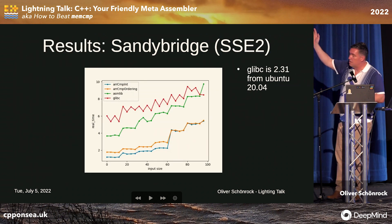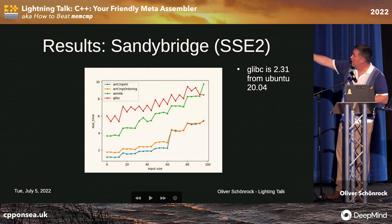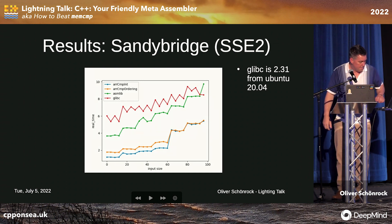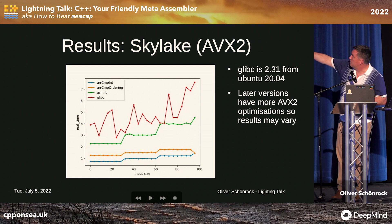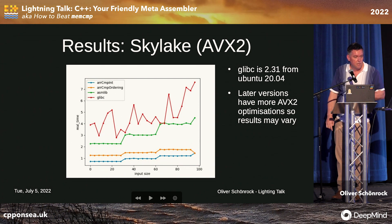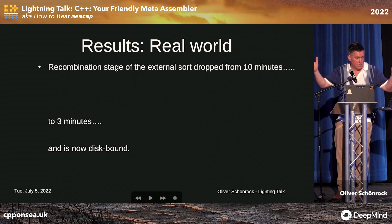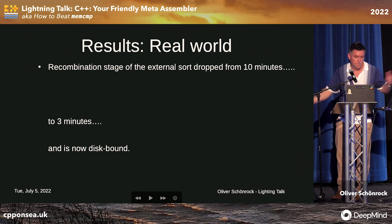Results: on an old Sandy Bridge CPU that only has SSE2, the top line is libc, the green is asmlib (hand-coded machine instructions), and the bottom two are two slightly different versions of my C++ assembler approach — significantly faster. On Skylake, I understand the latest version of libc is slightly better, so there may be some improvements there, but there's still quite a difference — three to four times faster. In the real world, sorting this large database of hashes went from 10 minutes to 3 minutes, and now the disk is the bottleneck.